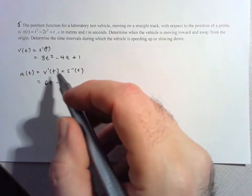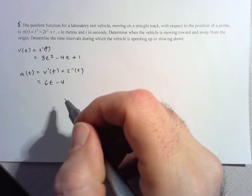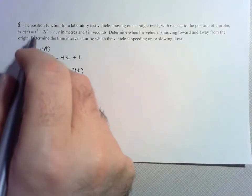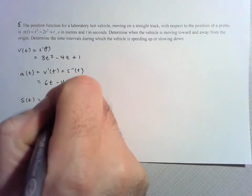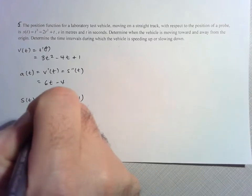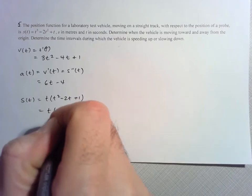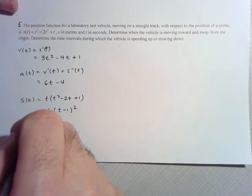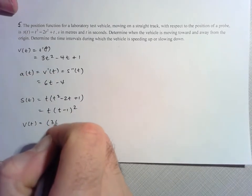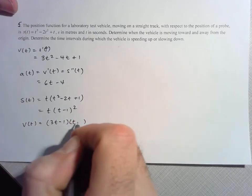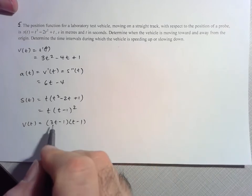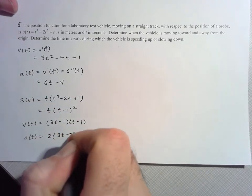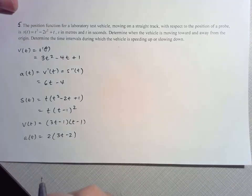Solving this problem is all about determining the signs of these functions. The first thing I want to do is factor them to find the zeros and determine where they're positive or negative. For s(t), I notice there's a common factor of t, leaving t² minus 2t plus 1, which factors as a perfect square: t(t − 1)². So the zeros of the position function occur at 0 and 1. The velocity function 3t² − 4t + 1 factors as (3t − 1)(t − 1), giving zeros at 1/3 and 1. And the acceleration 6t − 4 factors as 2(3t − 2), giving a zero at 2/3.